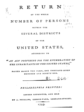Race and ethnicity are considered separate and distinct identities, with Hispanic or Latino origin asked as a separate question. Thus, in addition to their race or races, all respondents are categorized by membership in one of two ethnic categories: Hispanic or Latino, and Not Hispanic or Latino. However, the practice of separating race and ethnicity as different categories has been criticized both by the American Anthropological Association and members of the U.S. Commission on Civil Rights.